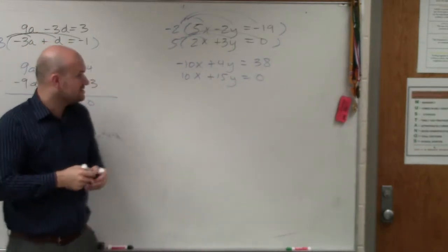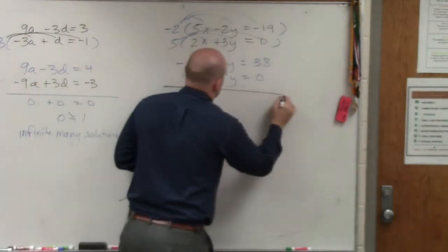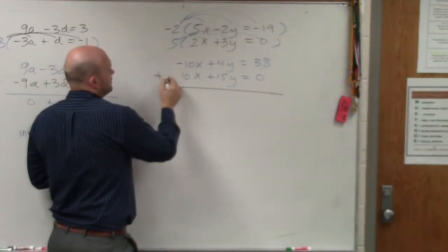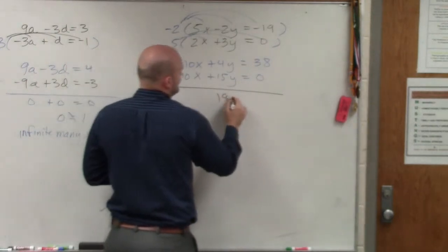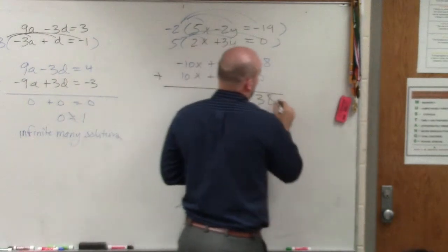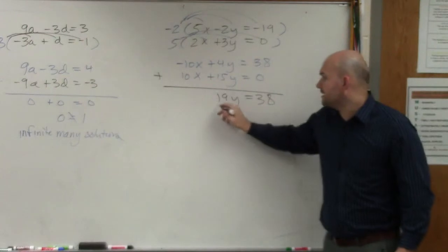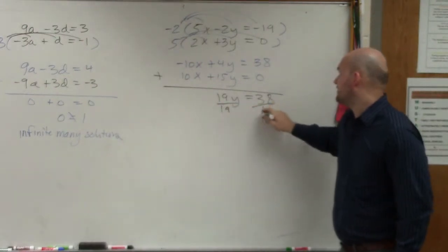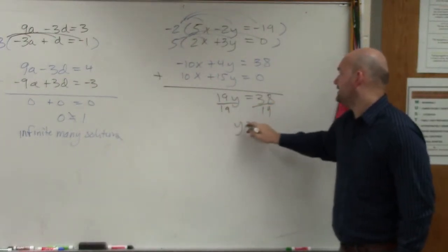So now I can just add the two equations. Adding the equations, I get 19y equals 38. Then I can just divide by 19. y equals 2.